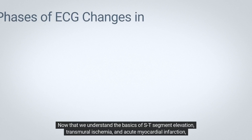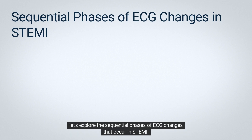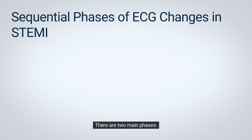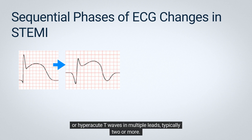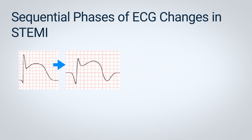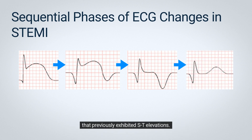Now that we understand the basics of ST-segment elevation, transmural ischemia, and acute myocardial infarction, let's explore the sequential phases of ECG changes that occur in STEMI. There are two main phases. The acute phase is characterized by the appearance of ST-segment elevations and sometimes tall positive or hyperacute T waves in multiple leads, typically two or more — this phase is referred to as STEMI. The evolving phase takes place hours or days later and is marked by deep T-wave inversions in the leads that previously exhibited ST elevations.